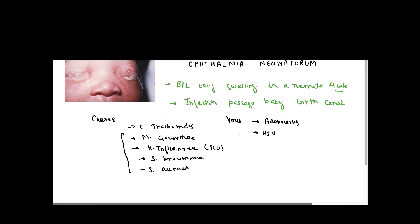Sometimes questions are asked about the time of onset in Ophthalmia Neonatorum. Dividing by time of onset: Chemical conjunctivitis — for example from Crede's solution — causes an abrupt onset within two to six hours. Other bacterial causes produce Ophthalmia Neonatorum within five to seven days.